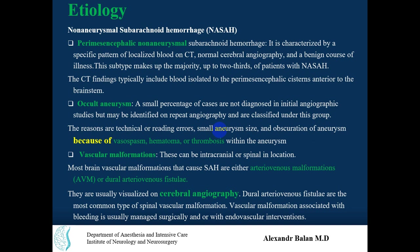Vascular malformations or abnormal vessel formations can be intracranial or spinal in location, or even a dural arteriovenous fistula. These are usually visualized on cerebral angiography. Dural arteriovenous fistulas are the most common type of spinal vascular malformation. These arteriovenous malformations can be associated with bleeding and are usually managed surgically or with endovascular embolization to close the pathological vessels.